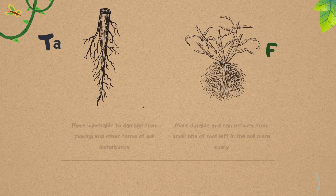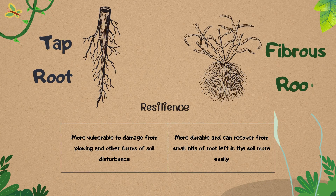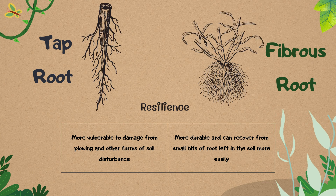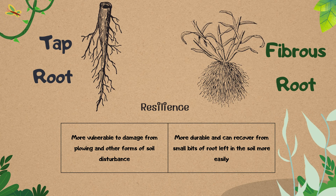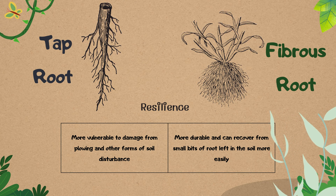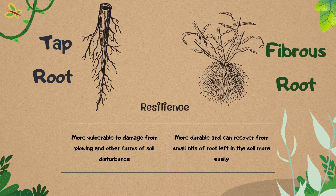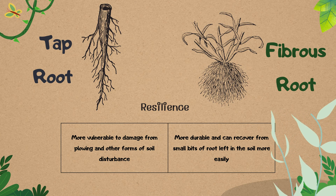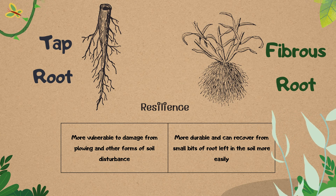Taproots are more vulnerable to damage from plowing and other forms of soil disturbance, but fibrous roots are more durable and can recover from small bits of root left in the soil more easily.